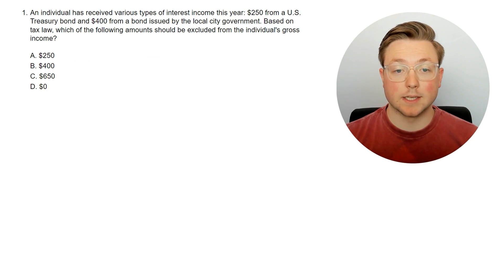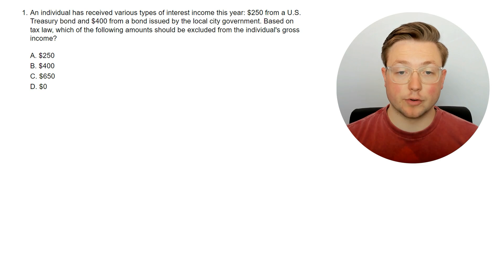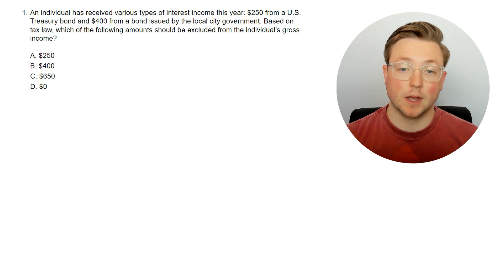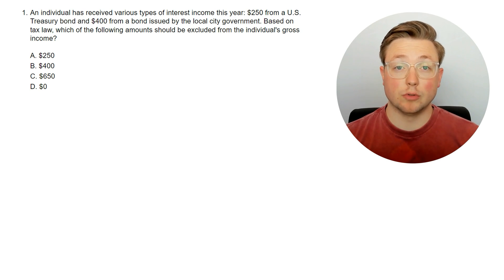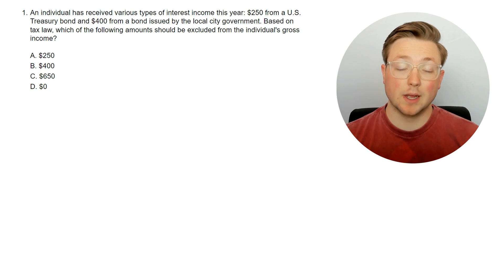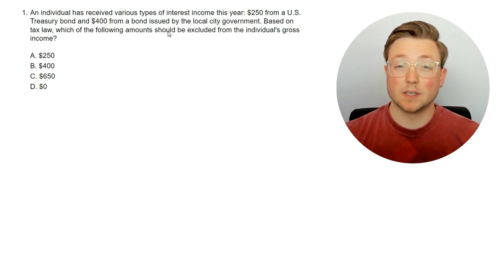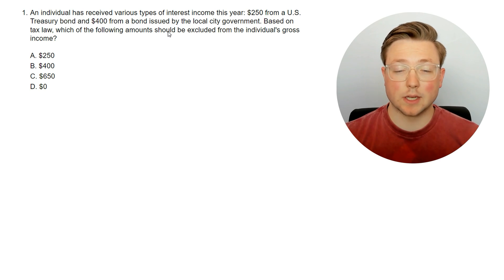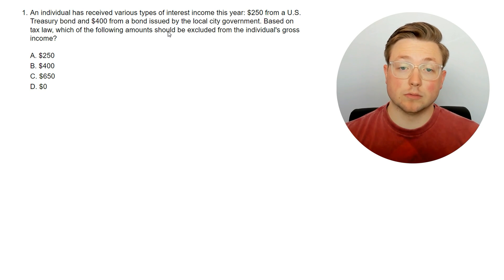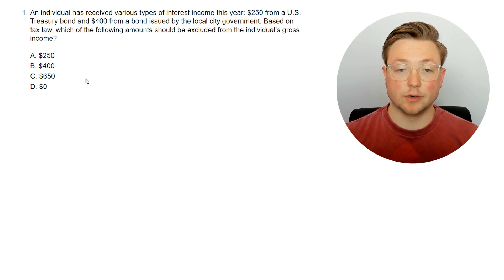Here's the first question. An individual has received various types of interest income this year: $250 from a U.S. Treasury bond and $400 from a bond issued by the local city government. Based on tax law, which of the following amounts should be excluded from the individual's gross income? One thing to note: make sure you always pay attention to the wording of the question. A lot of questions might ask what should be included in gross income, but this question is asking what should be excluded. If this is your first time looking at this, we'll go straight into the answer to start learning the material.